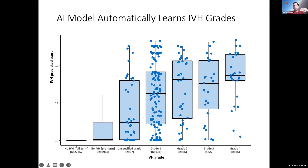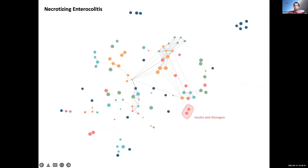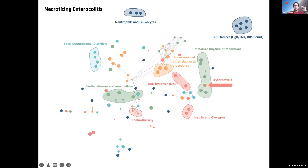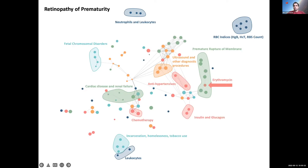When looking at how the model works, it uses maternal features such as insulin use, antihypertensive use, history of chemotherapy years before pregnancy, and even social determinants of health including incarceration and homelessness. Looking at NEC specifically, vitamin B complex use — normally considered safe in pregnancy and known not to affect preterm birth overall — does affect specific morbidities in babies.